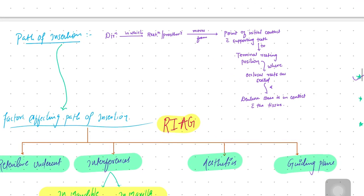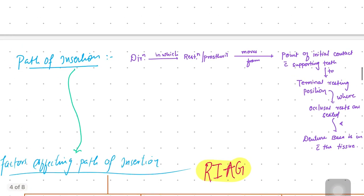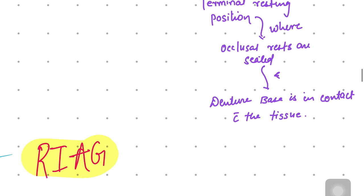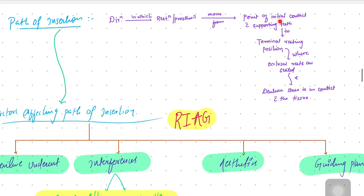Path of insertion is an important concept. The definition of path of insertion is: the direction in which the restoration or prosthesis moves from the point of initial contact with supporting teeth to the terminal resting position — where the occlusal rest is seated and the denture base is in contact with the tissue. This is the basic definition of path of insertion.